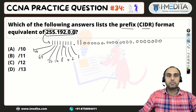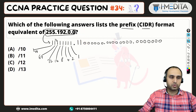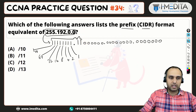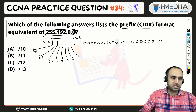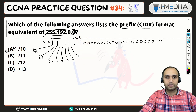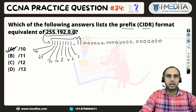So, if we count the number of ones, that will be 8 ones and then 9 and 10. So slash 10 is the right answer for this question. I hope you enjoyed this. Thanks for watching.